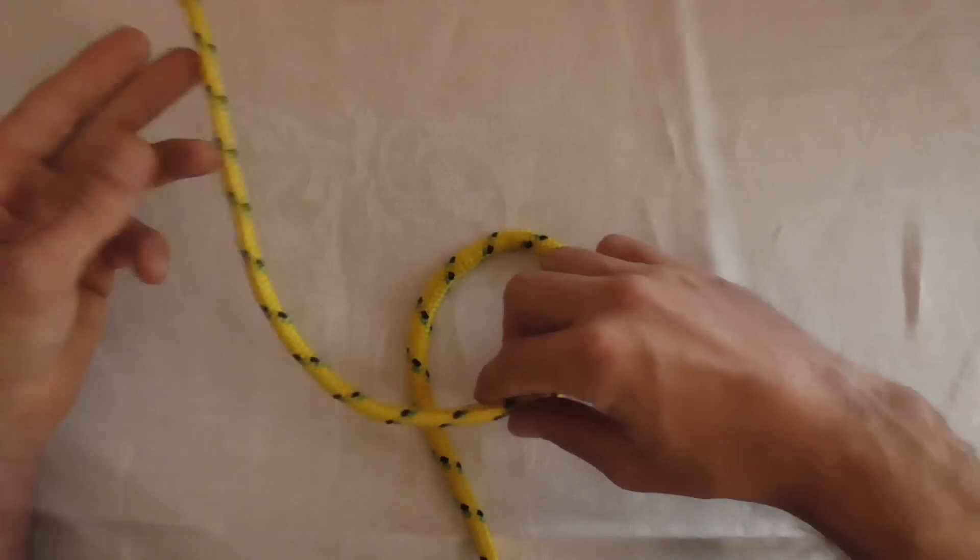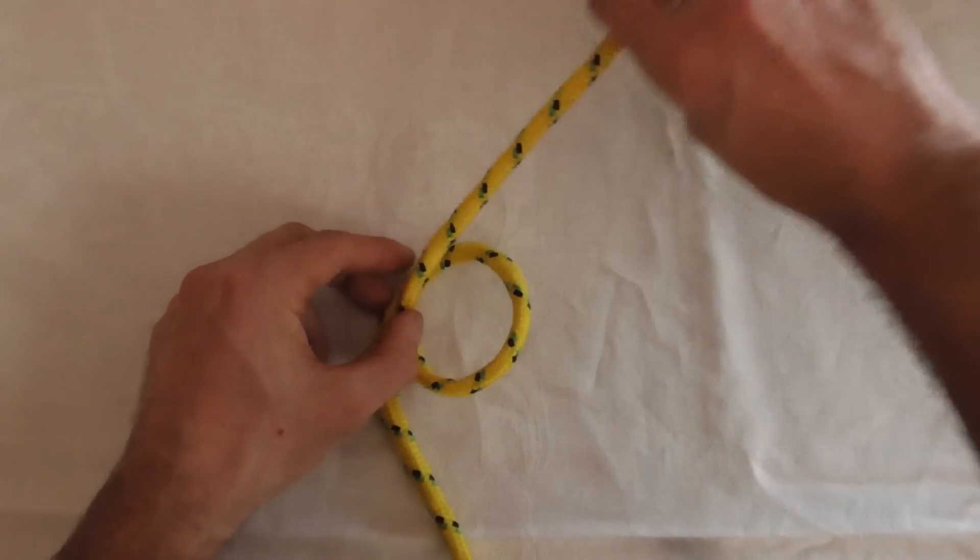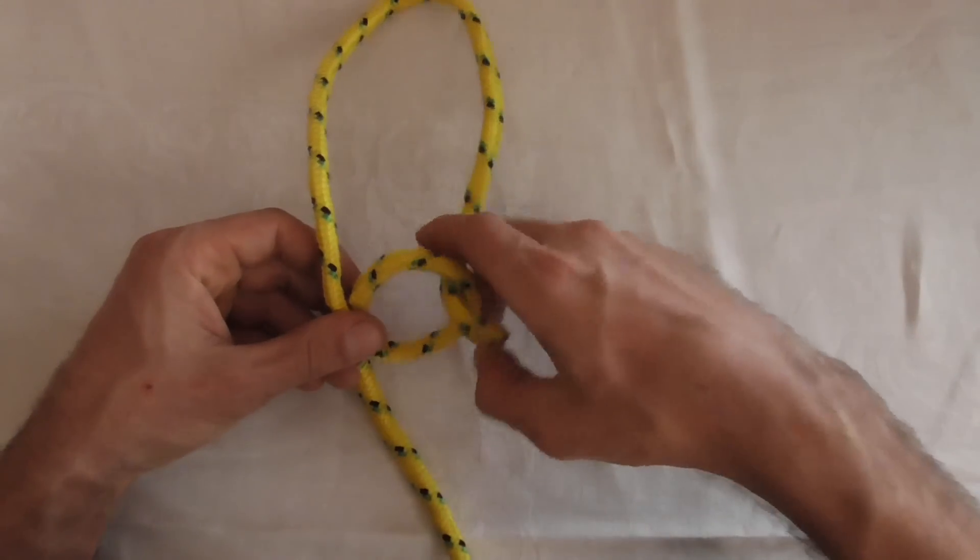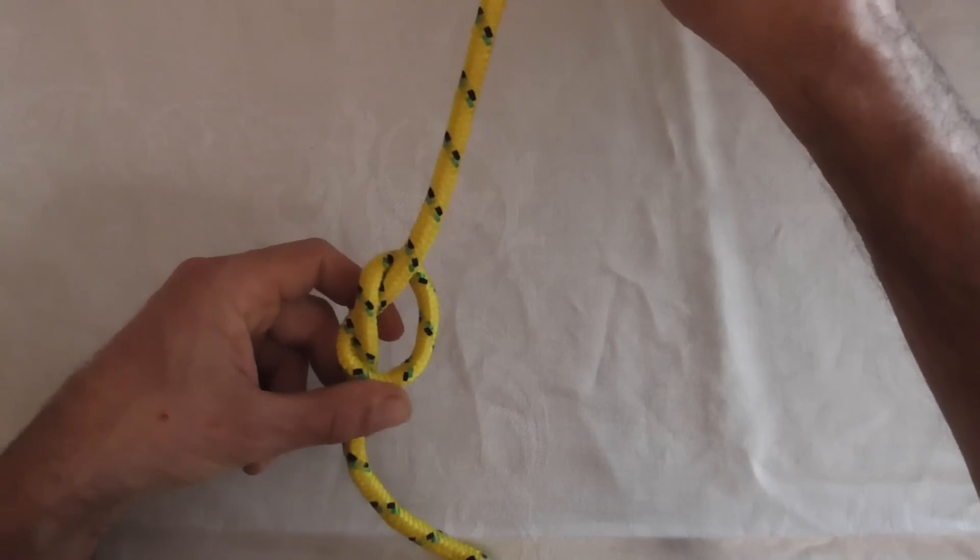To tie it we will take our rope and we will put in an overhand loop, and then we are going to tuck the working end through that loop and make a simple overhand knot.